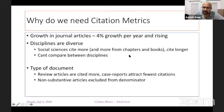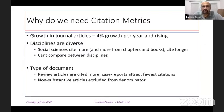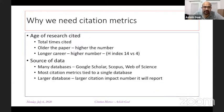Citation metrics help address this problem. In addition, disciplines are diverse — social sciences tend to cite more and cite more from chapters and books, so you can't compare between disciplines. Also, the type of documents matters: review articles tend to be cited much more broadly, and non-substantive articles such as meeting reports and editorials are usually excluded from citation metric denominators.